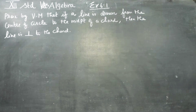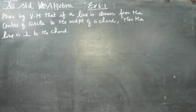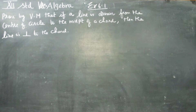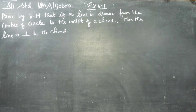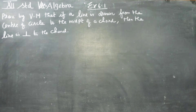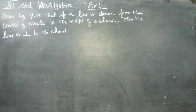Dear 12th standard students, in applications of vector algebra, exercise 6.1: prove by vector method that if a line is drawn from the center of the circle to the midpoint of a chord, then the line is perpendicular to the chord.